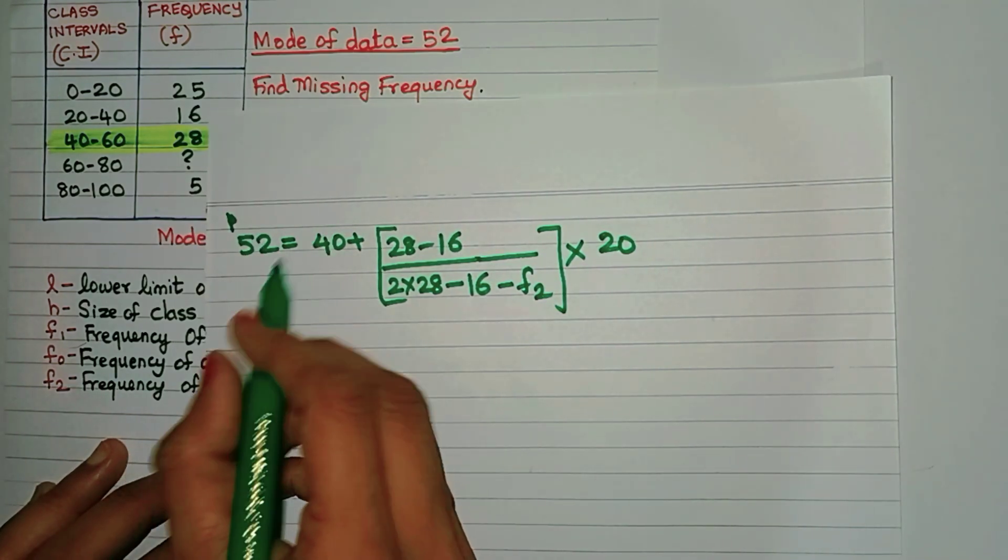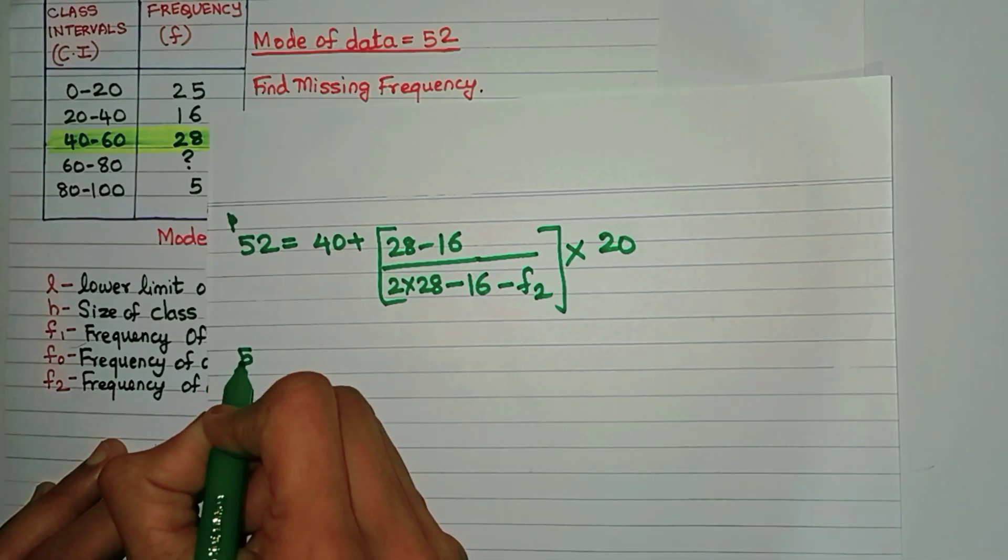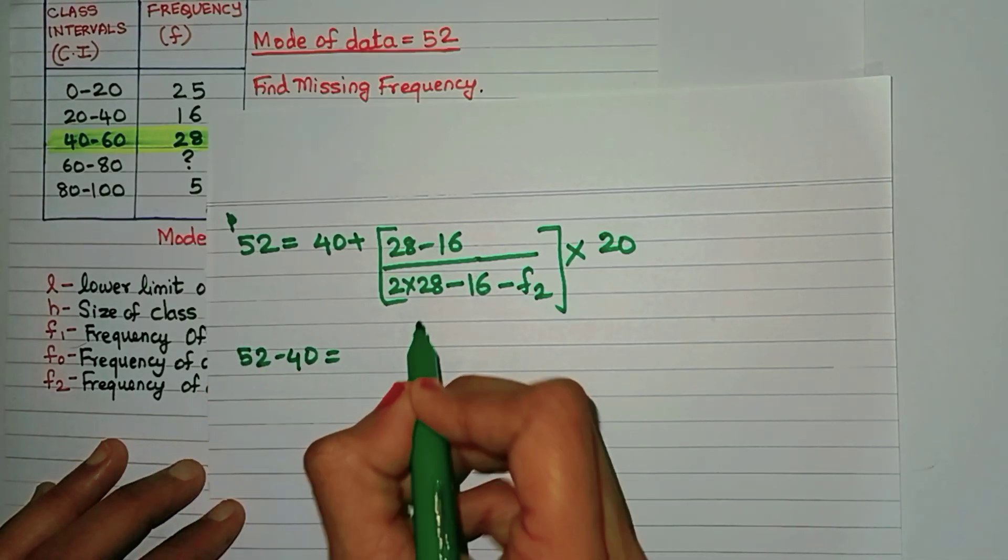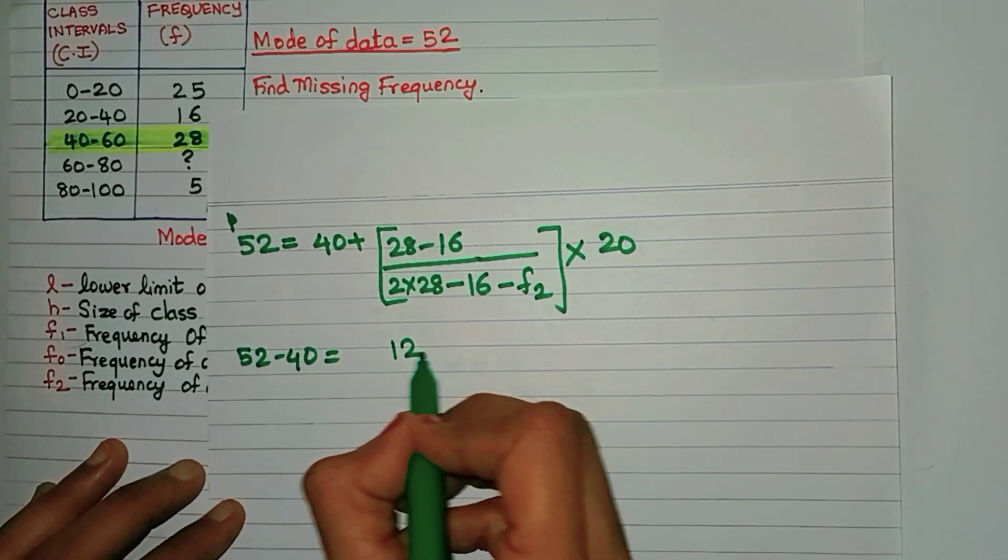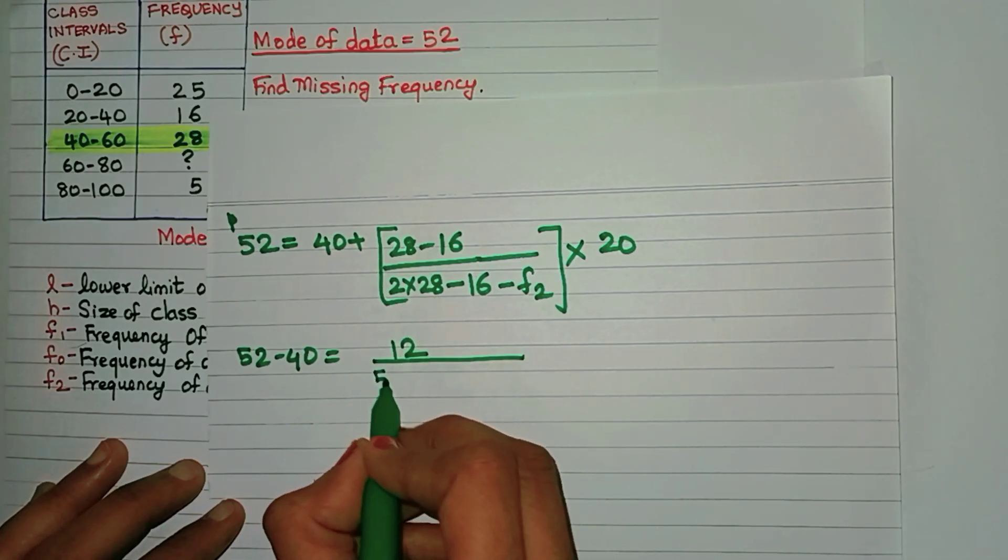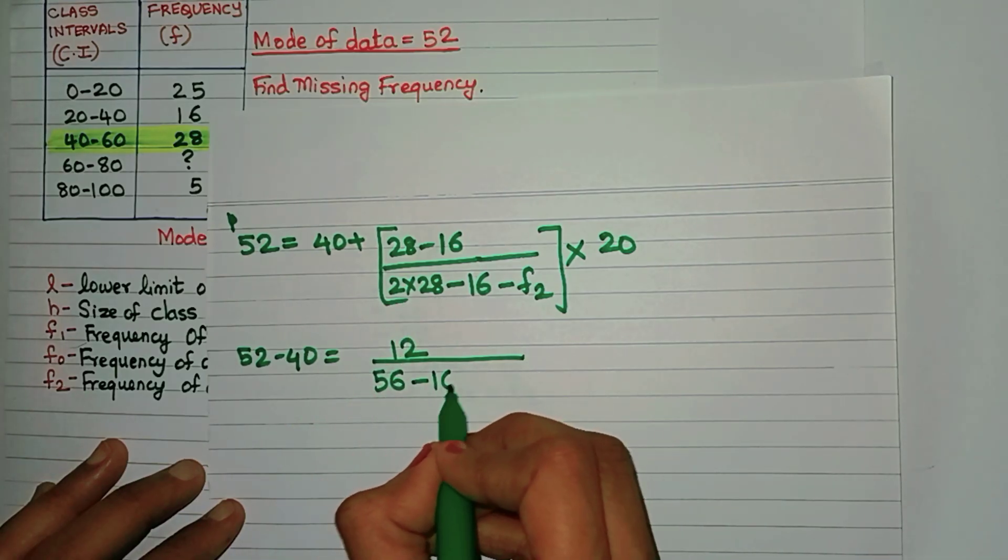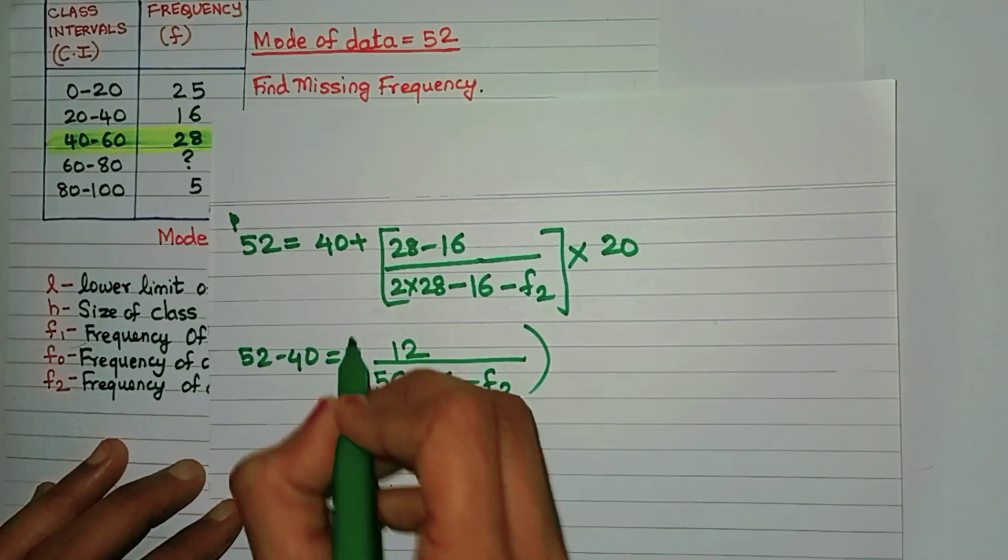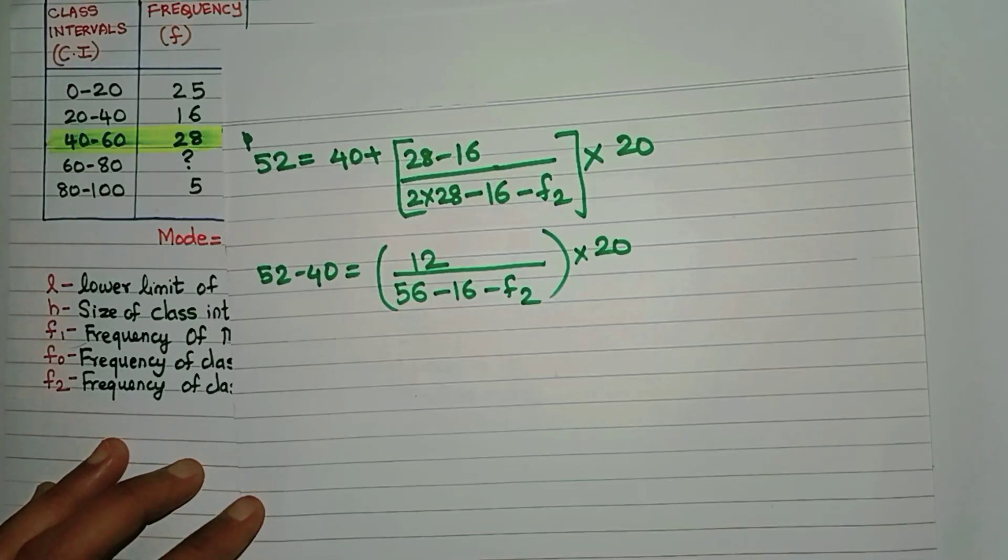So let me bring the 40 to the other side. So 52 minus 40 I'll get over here. And this will be 28 minus 16, which is 12 divided by 2 times 28, that is 56, minus 16 minus F2. Remember, all this is in bracket multiplied by 20.